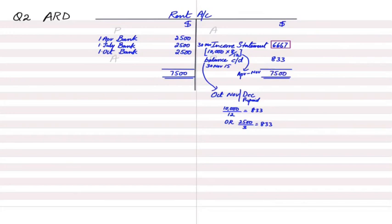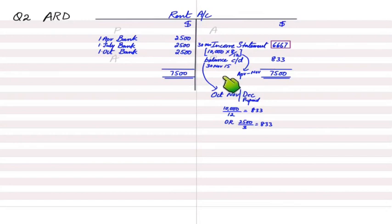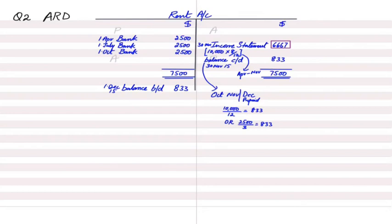We now close the rent account. Both sides balance. The balance carried down of £833 becomes the balance brought down at the start of the next accounting period — that is 1st December. This closing balance is the prepaid rent.